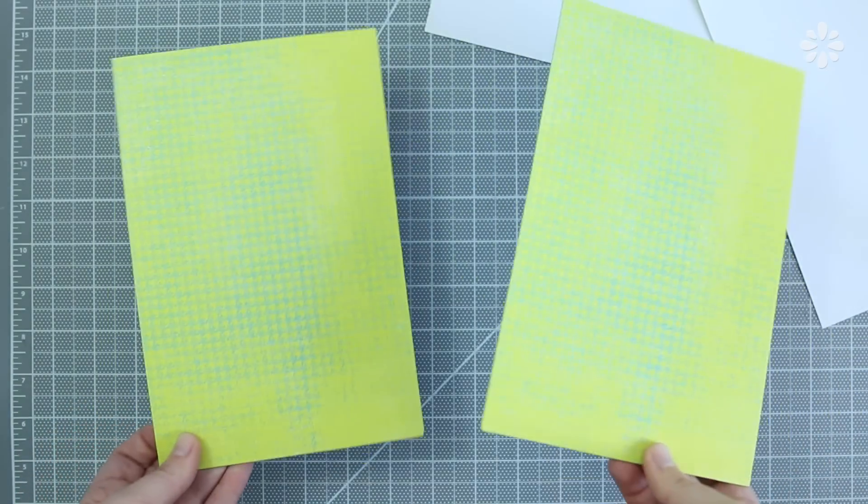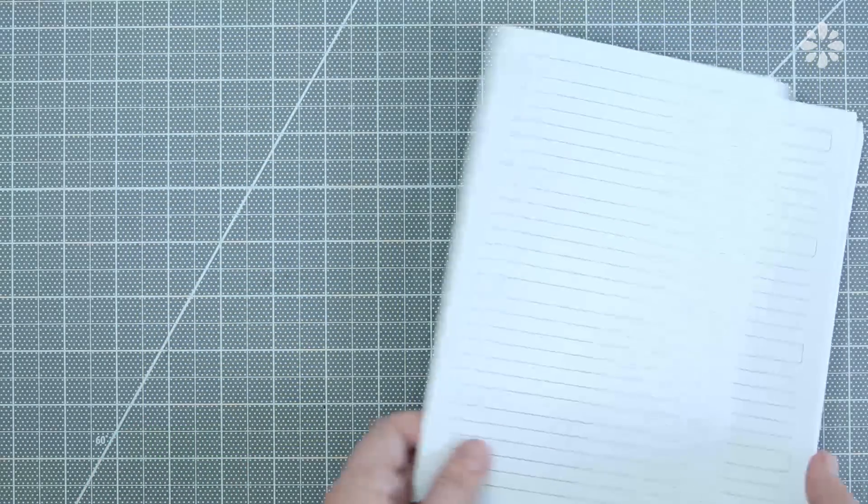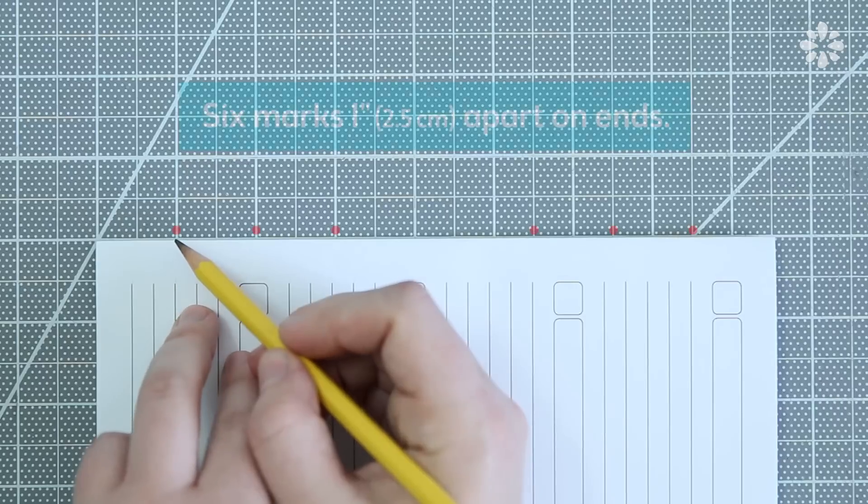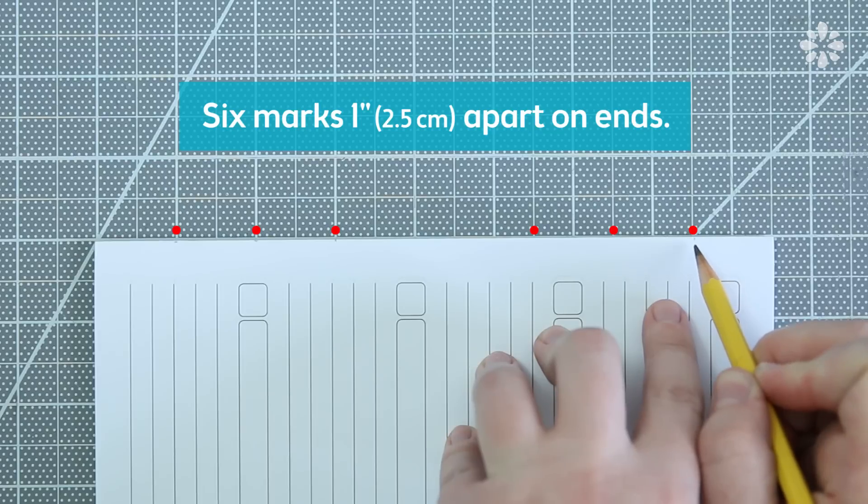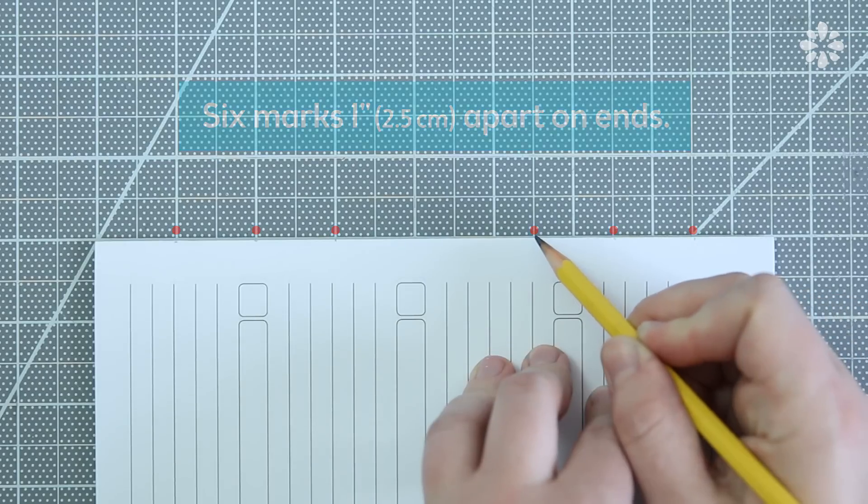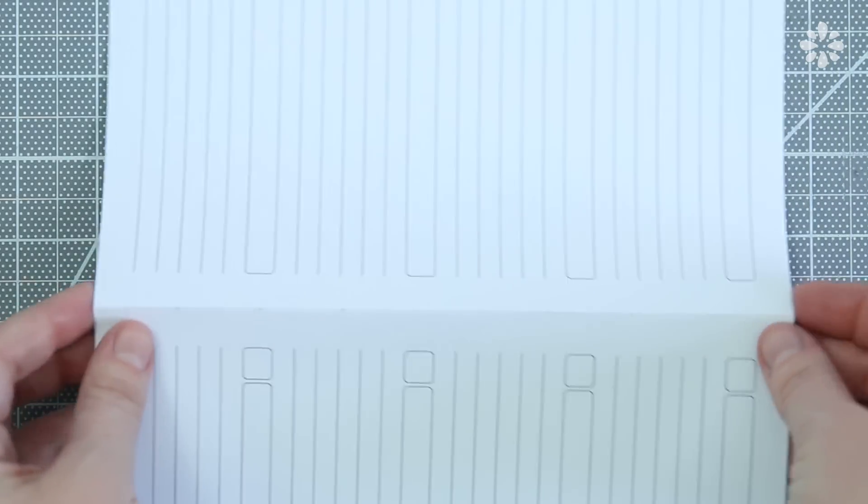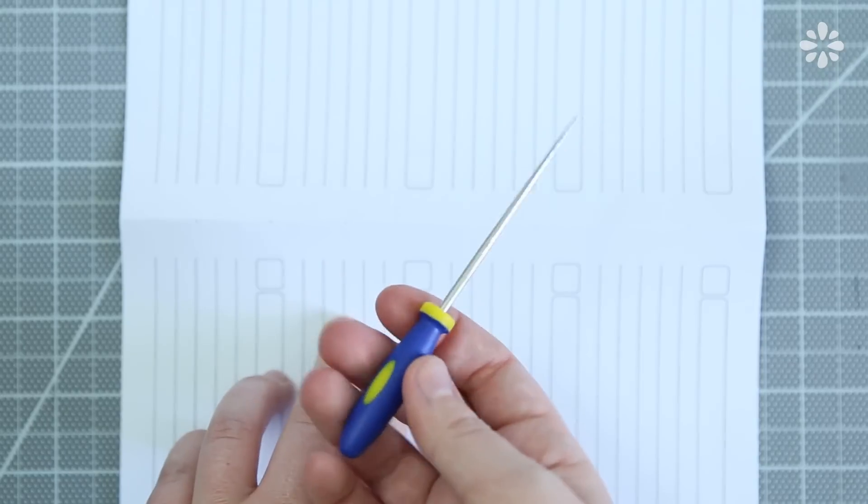Now I'm going to make the binding holes. On the folded edge of one signature, I marked six points on both ends that are an inch apart. The measurement between the binding holes is really up to you, and you can change it if you want a different look to your binding. Now unfold the signature, but making sure that they're all centered together, and pierce those marks with an awl.